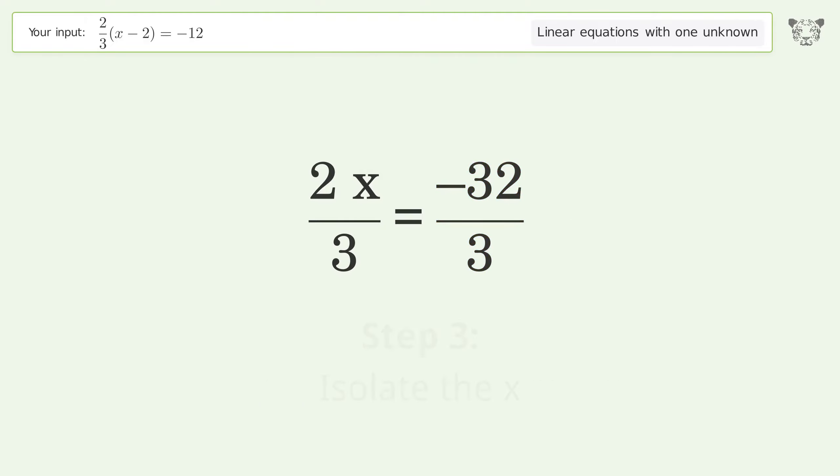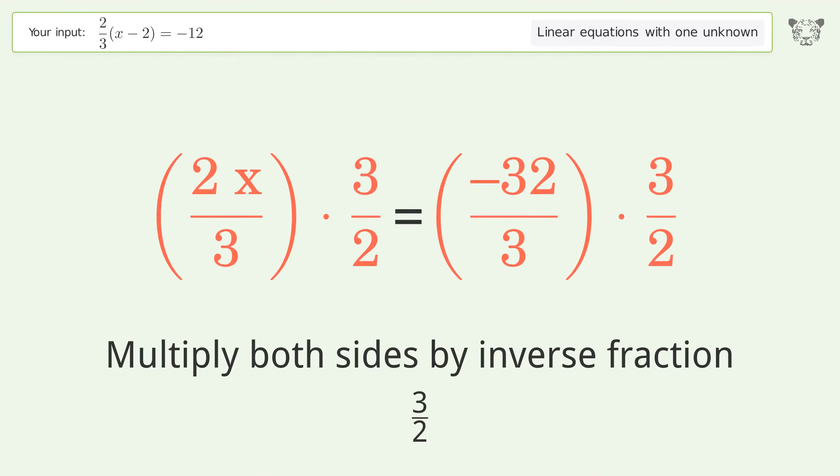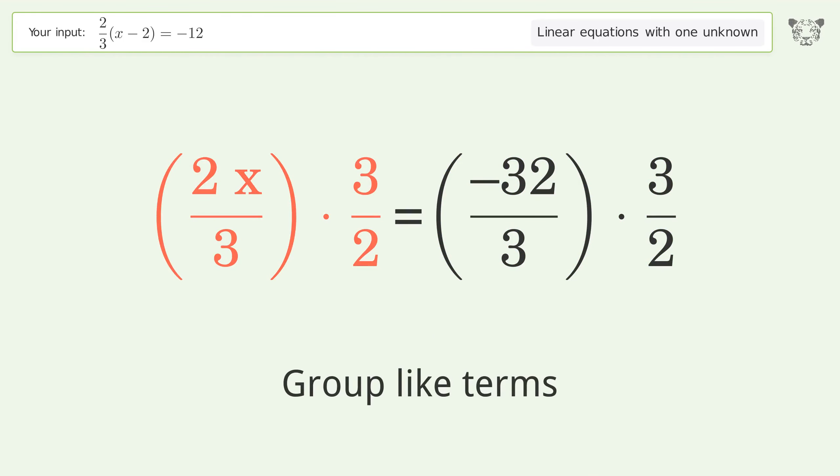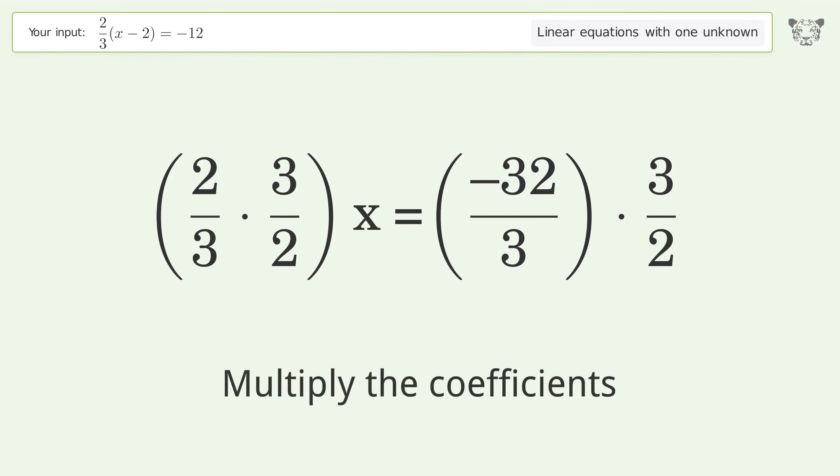Isolate the x. Multiply both sides by inverse fraction 3 over 2. Group like terms, multiply the coefficients.